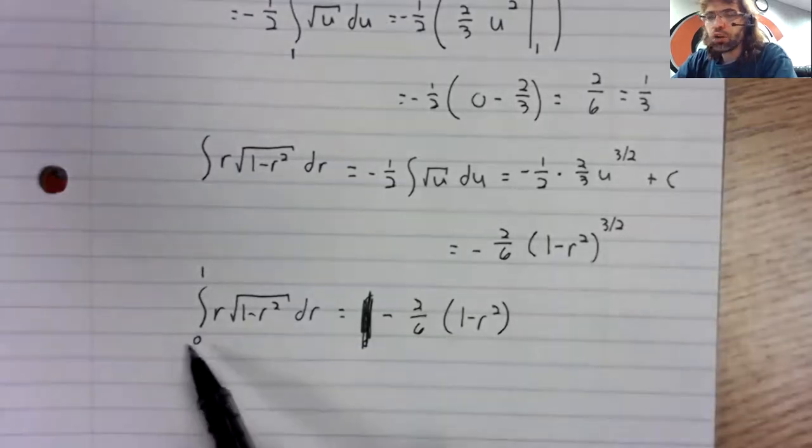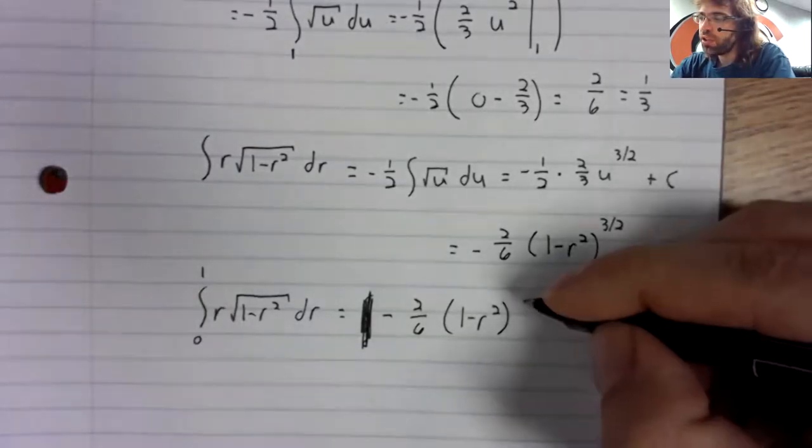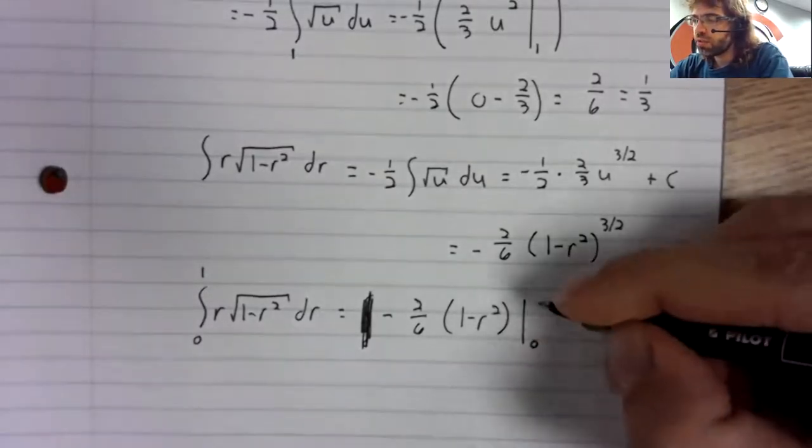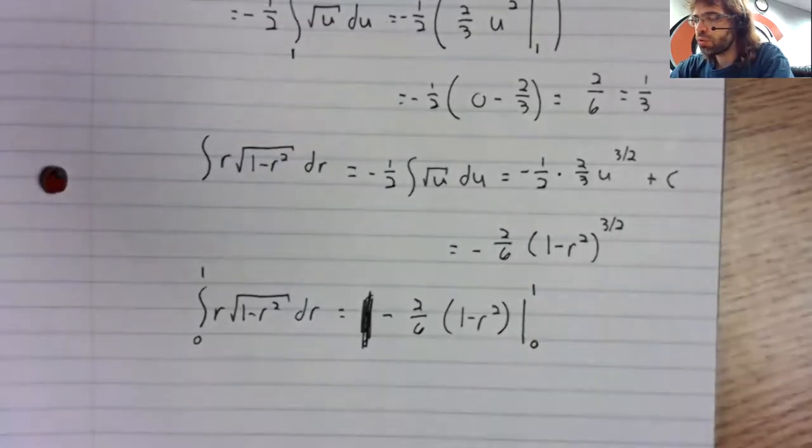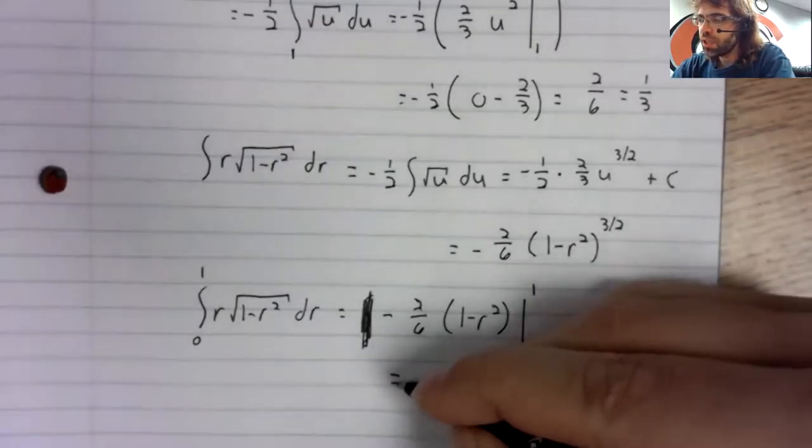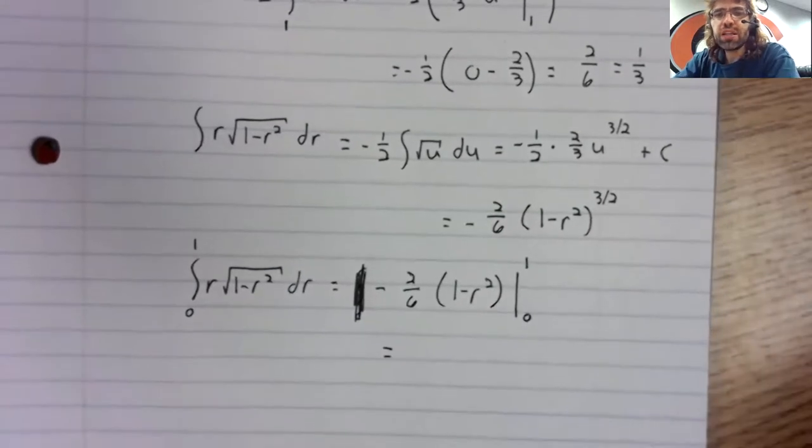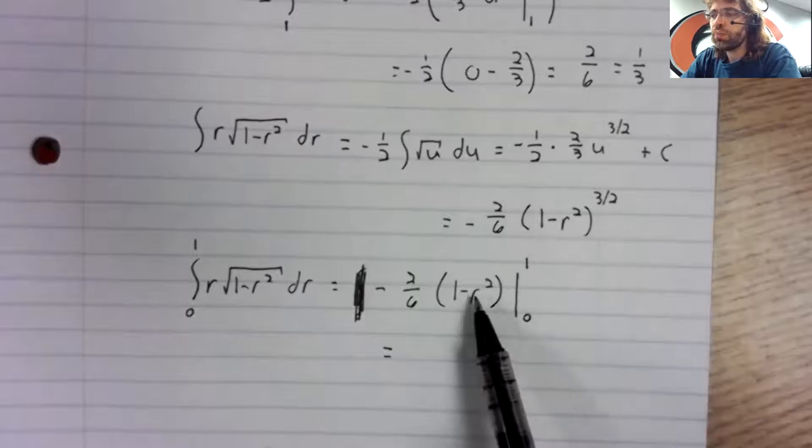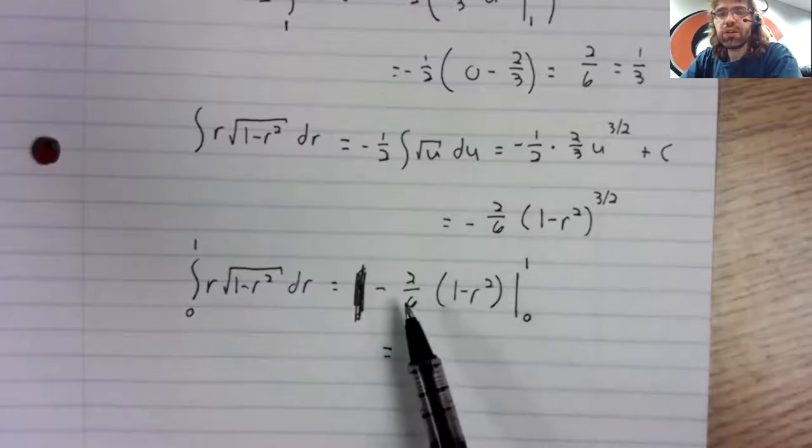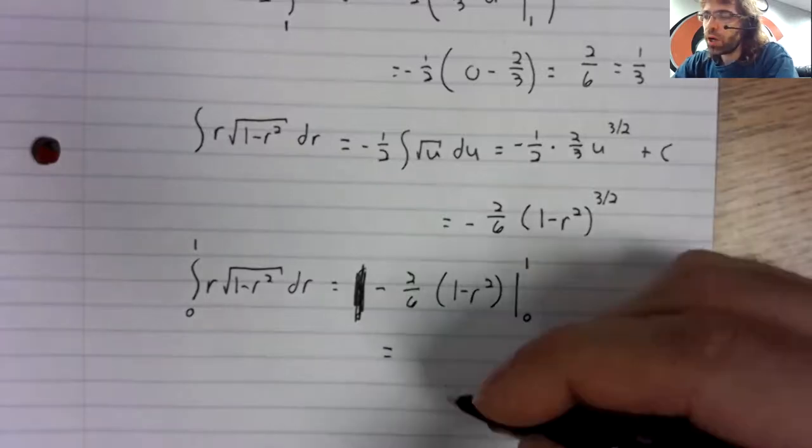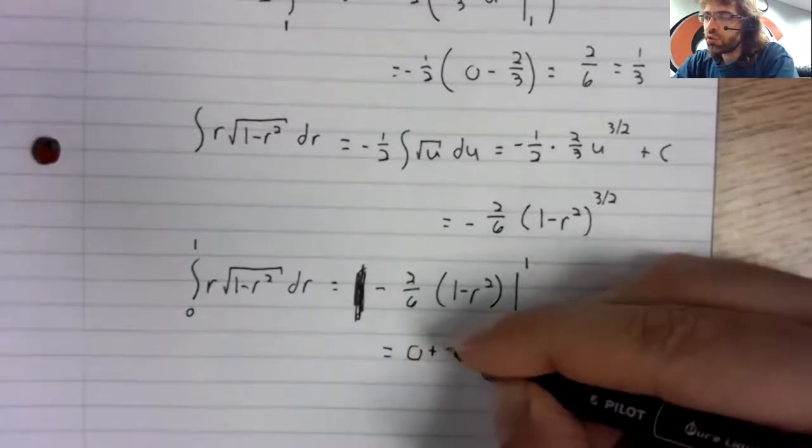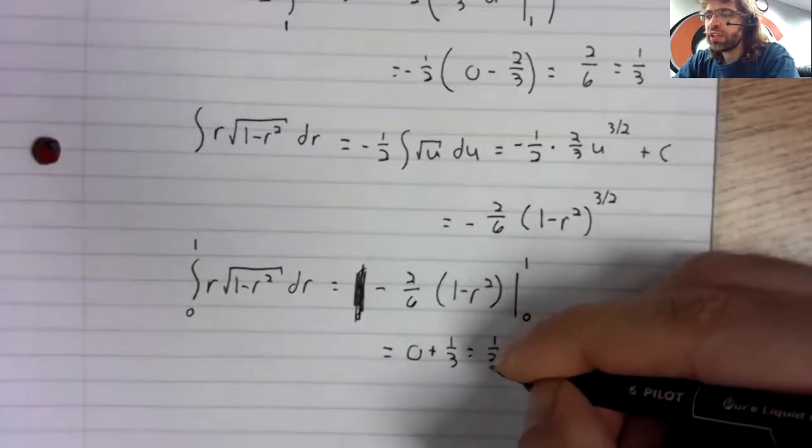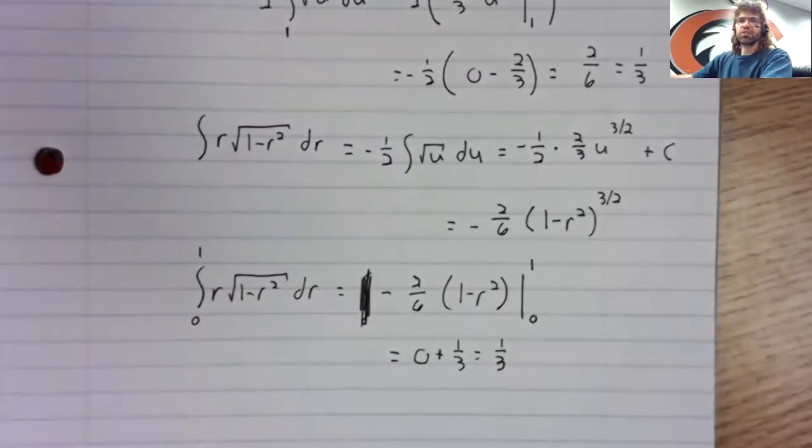Negative 2 sixths times u to the 3 halves. And once we've found the indefinite integral, we can use the fundamental theorem to find the definite integral. Now, r is going from 0 to 1. And we get the same thing. Plug 1 in here, get 0. Plug 0 in here, get negative 1 third. 0 minus negative 1 third is positive 1 third.